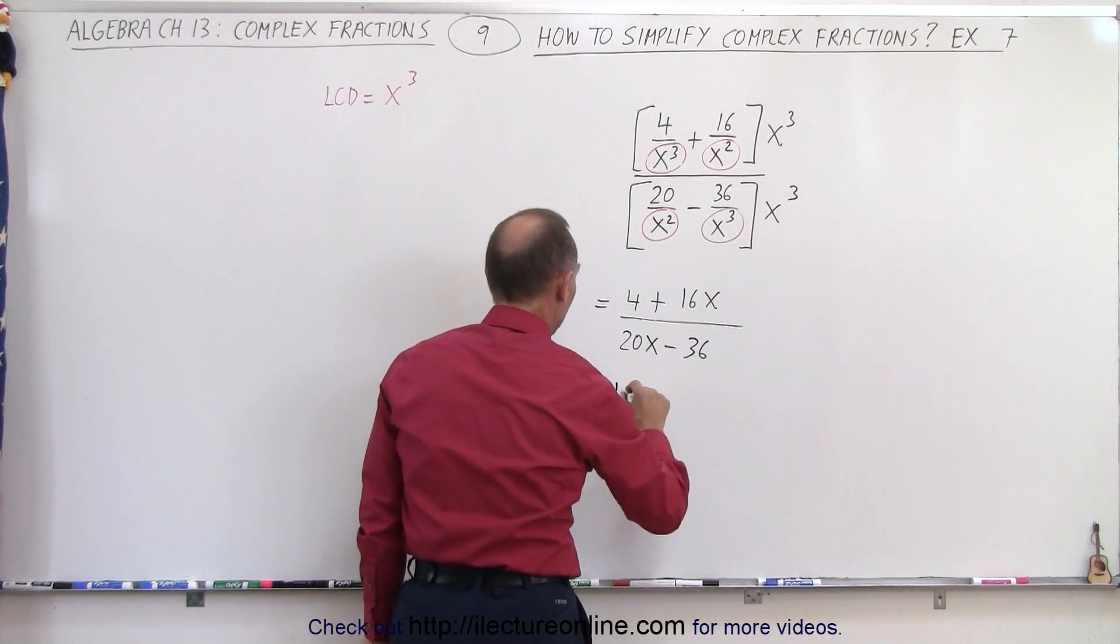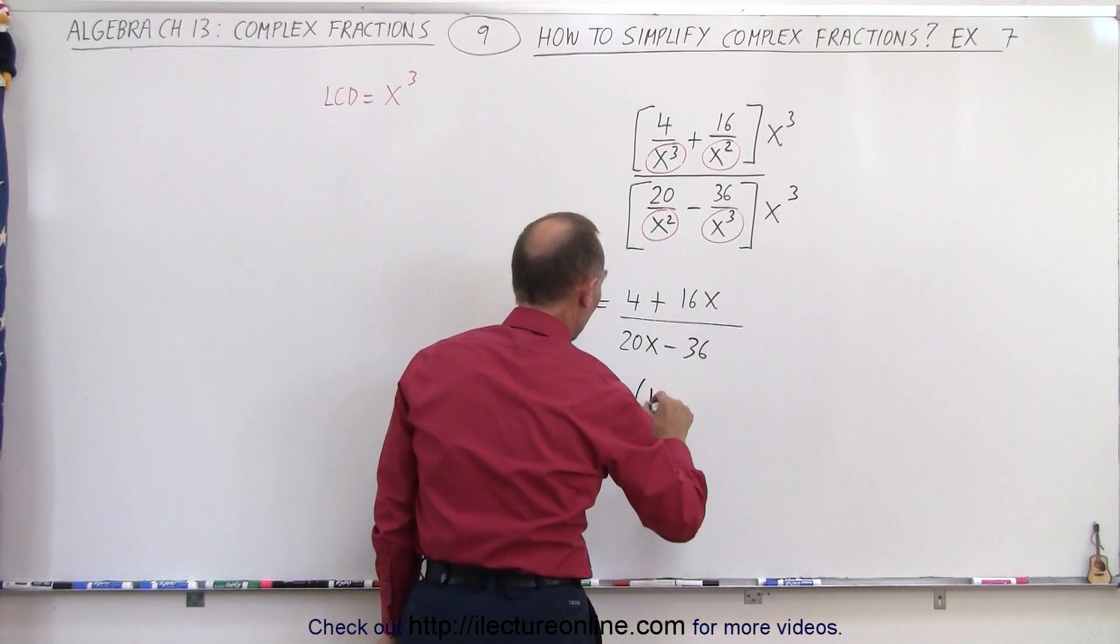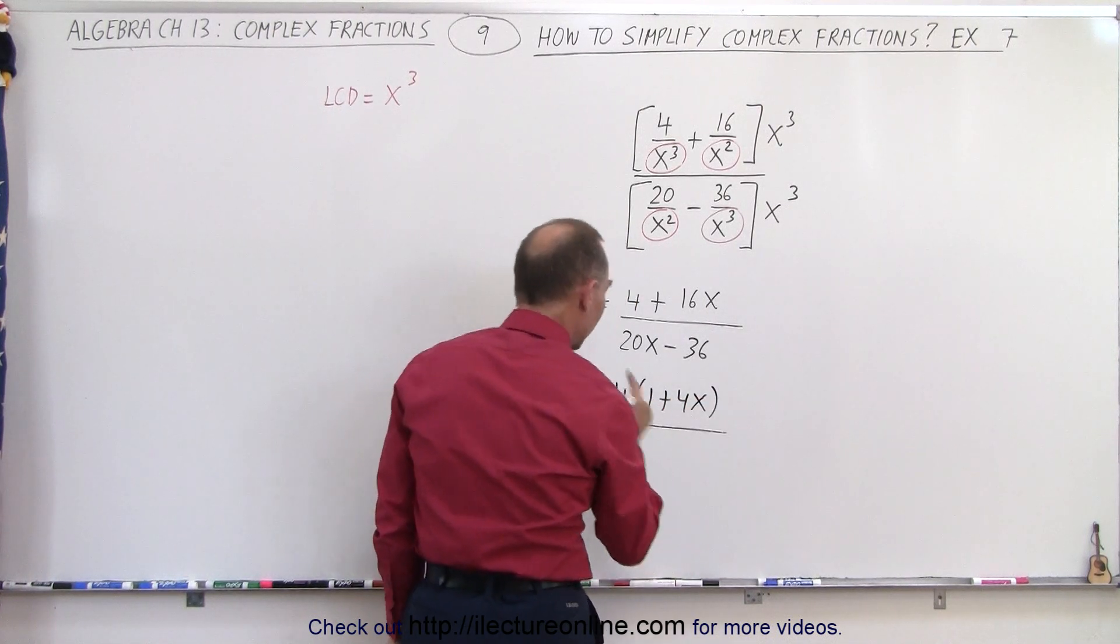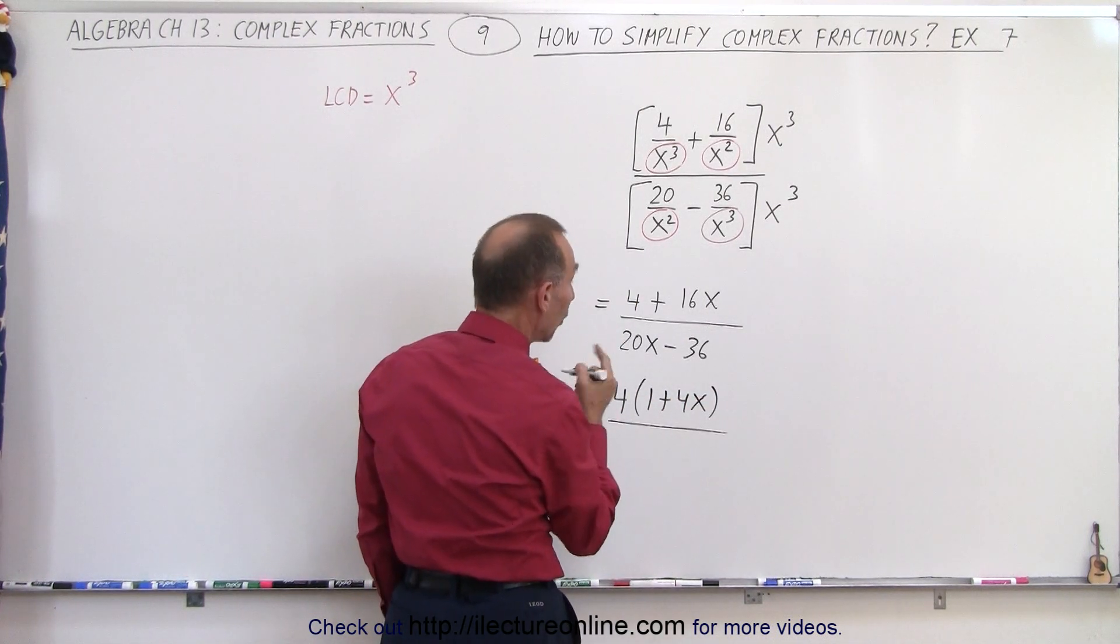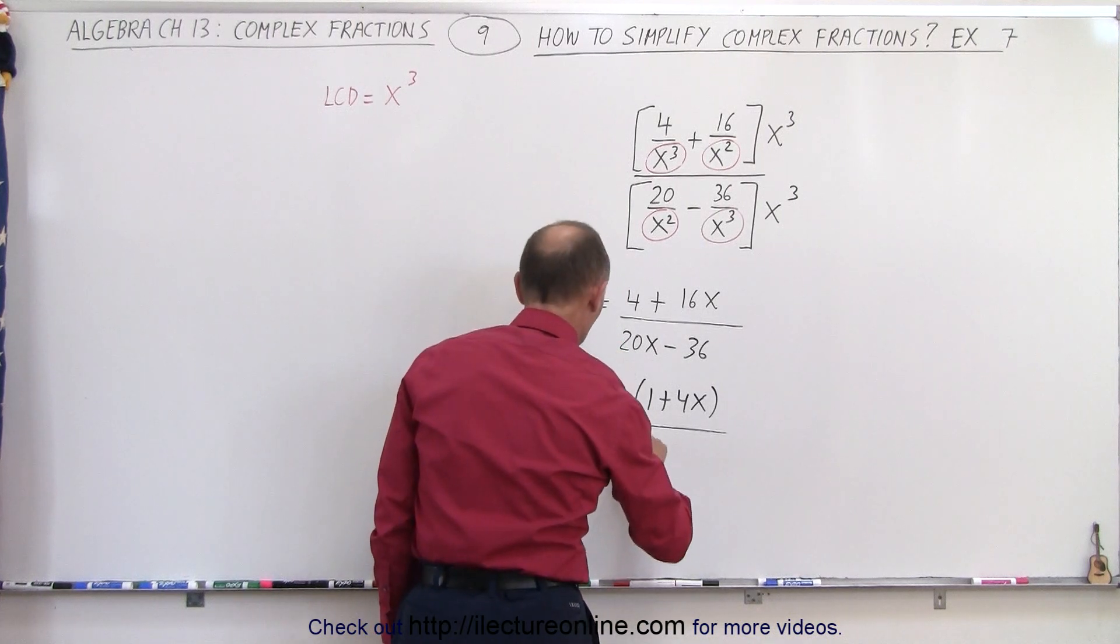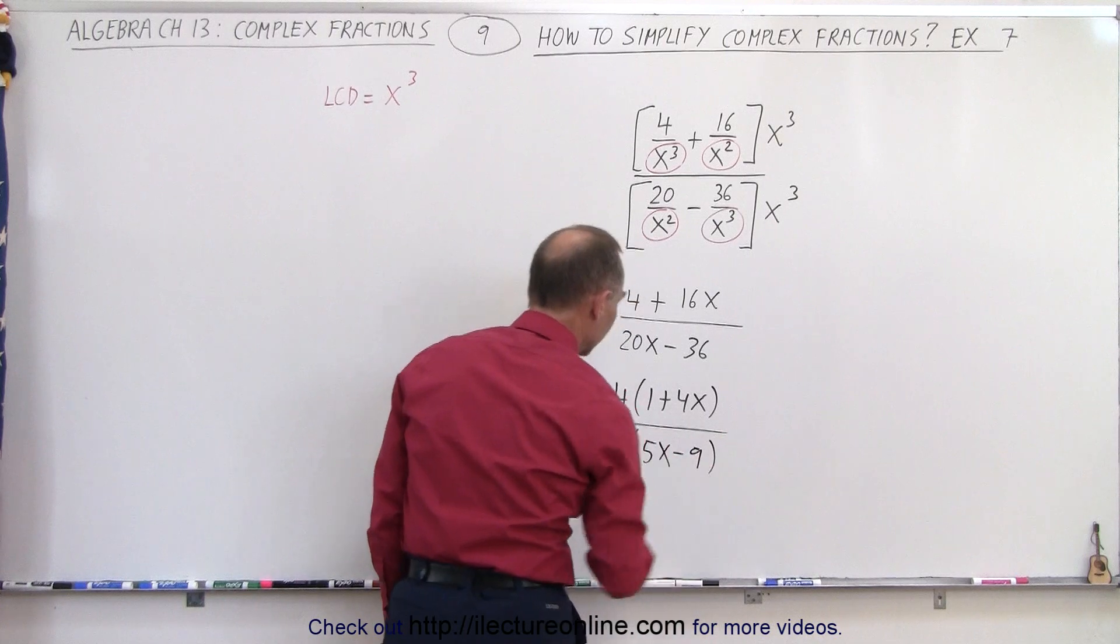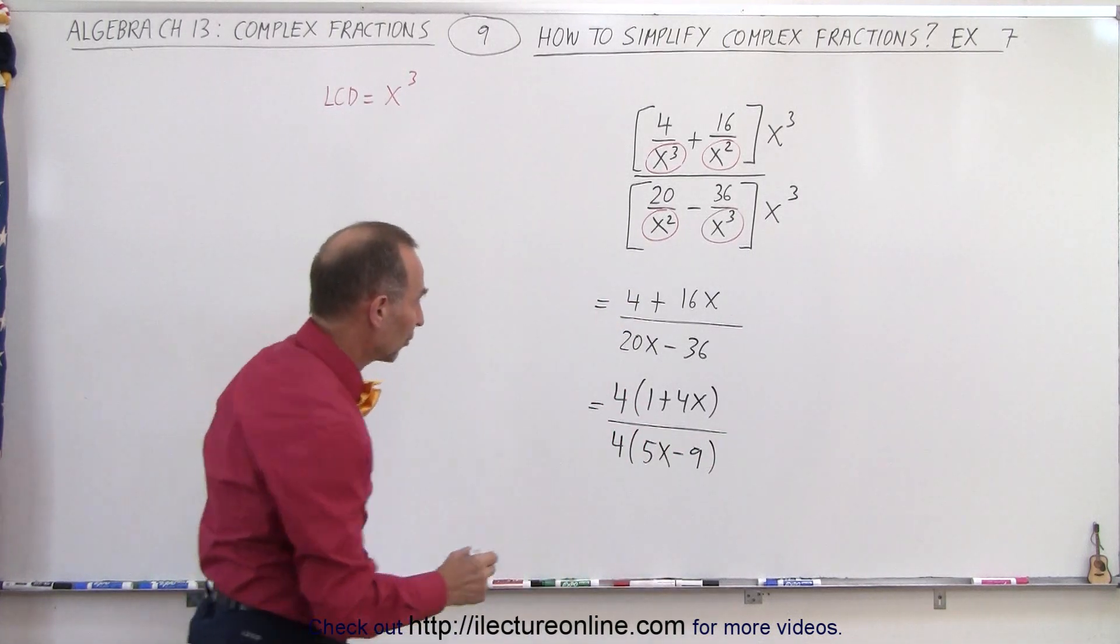Surely, I can factor out a 4 out of the numerator, and I'm left with 1 plus 4x. And in the denominator, I can factor out also a 4, so it gives me 4 times 5x minus 9.